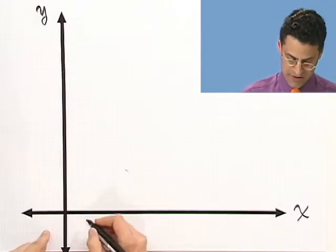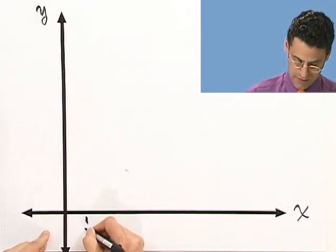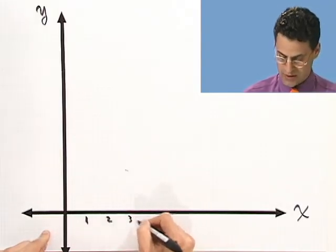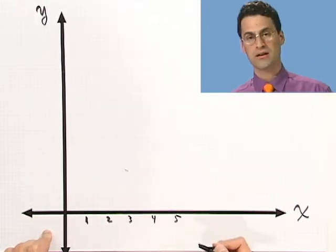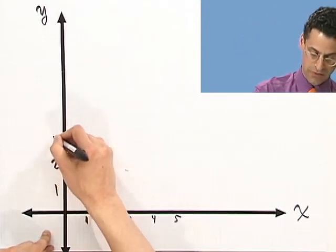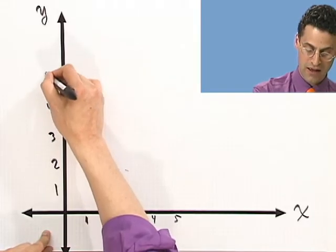And then as we march off this way, this would become positive values. This would be 1, 2, 3, 4, 5, and so on. And then up here, we have 1, 2, 3, 4, 5.